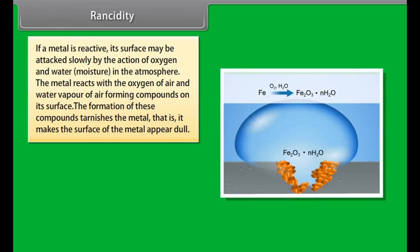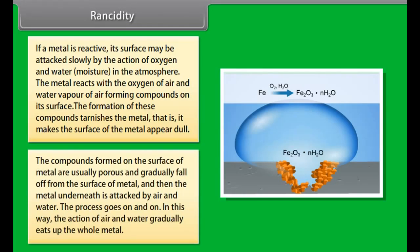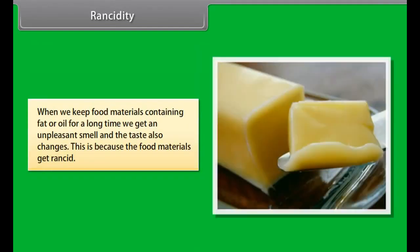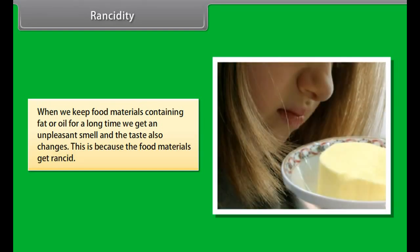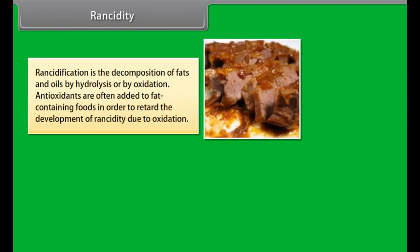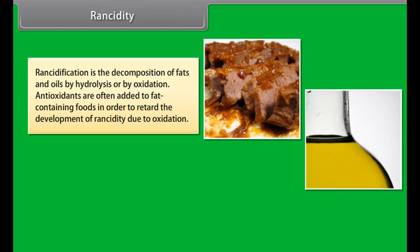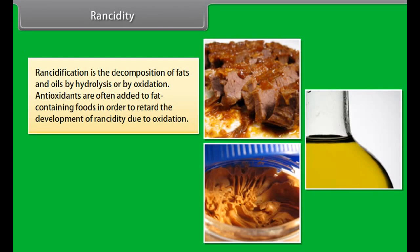Oxidation is defined as the gain of oxygen, or loss of hydrogen, or loss of electrons by a substance. For example, sodium gets oxidized when it changes to Na⁺. Reduction is defined as the gain of hydrogen, or loss of oxygen, or gain of electrons by a substance. Zinc gets oxidized to Zn²⁺ when a zinc rod is dipped in copper sulfate solution — zinc loses two electrons to become Zn²⁺. On the other hand, Cu²⁺ gets reduced as it accepts two electrons released by Zn to become Cu.